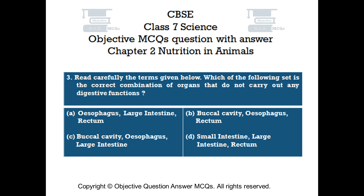Question number 3. Which of the following set is the correct combination of organs that do not carry out any digestive functions? Option A: Esophagus, large intestine, rectum. Option B: Buccal cavity, esophagus, rectum. Option C: Buccal cavity, esophagus, large intestine. Option D: Small intestine, large intestine, rectum.